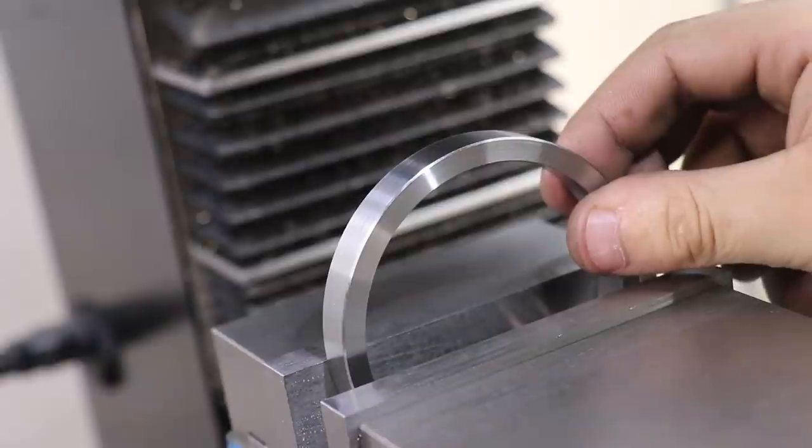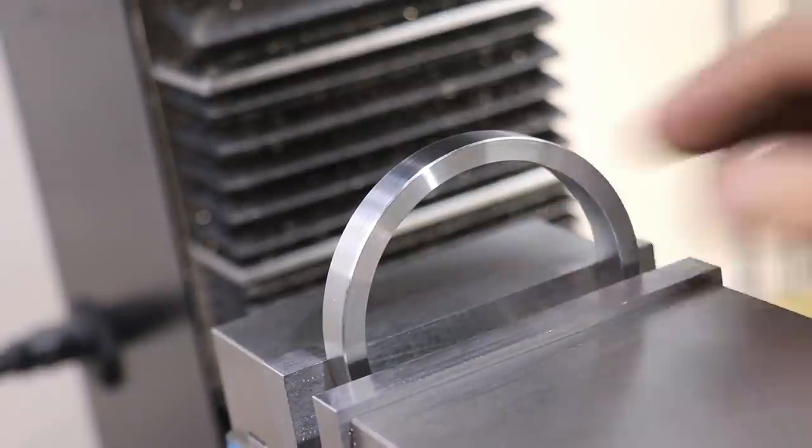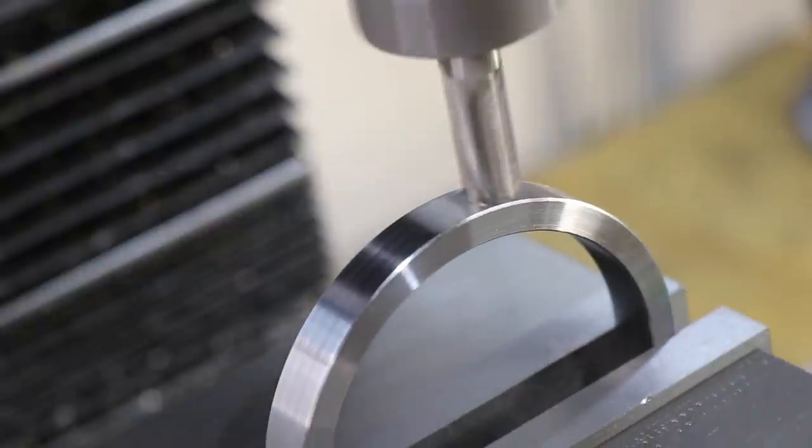With the ring machined in, I'll take it to the mill and I'll cut in a 25 millimeter flat across the top.